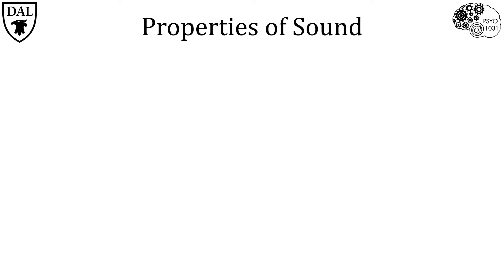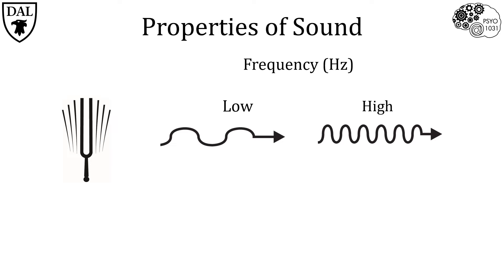Frequency, measured in Hertz, refers to the number of wave cycles per second. For example, here we can see a low frequency wave and a high frequency wave. The frequency of the sound wave determines its pitch or tone.